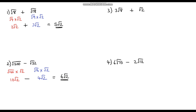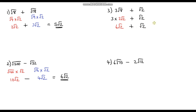Question 3: 3 root 8 plus root 2. Let's deal with root 8 first — we've already simplified it, so that is 2 root 2. So we have 3 times 2 root 2, and we're adding on root 2, which can't be simplified further and is already in its simplest form. So 3 times 2 root 2 is 6 root 2, and we are adding on 1 root 2. So 6 root 2 plus 1 root 2 gives us 7 root 2.